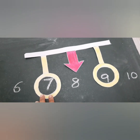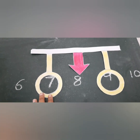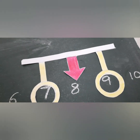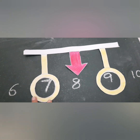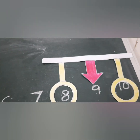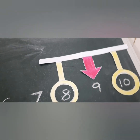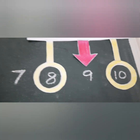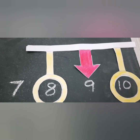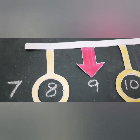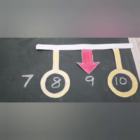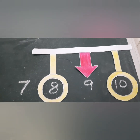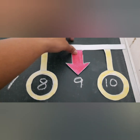What comes between 7 and 9? 8 — very good. What comes between 8 and 10? 9 — very good.